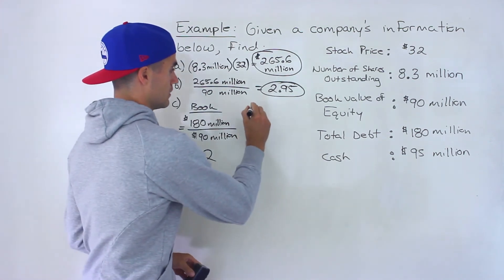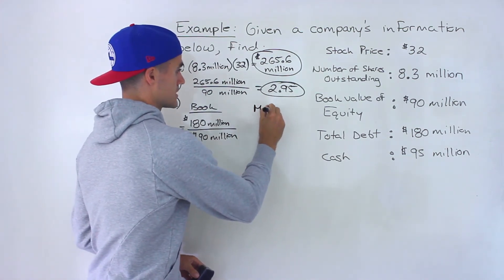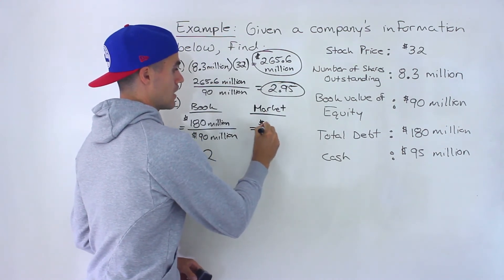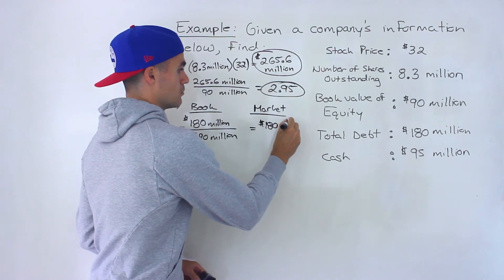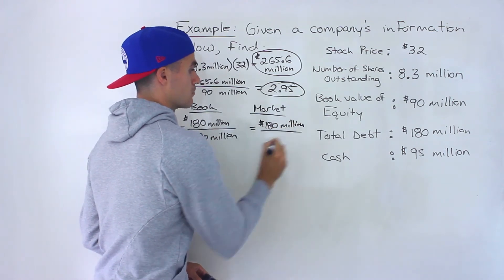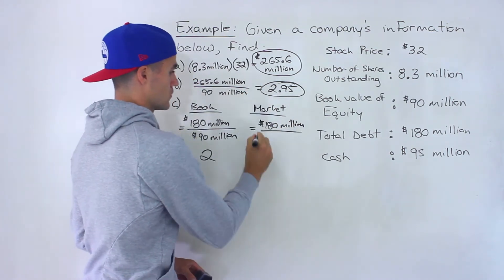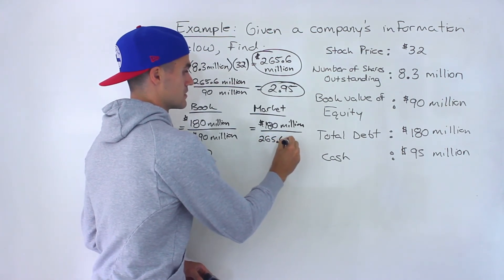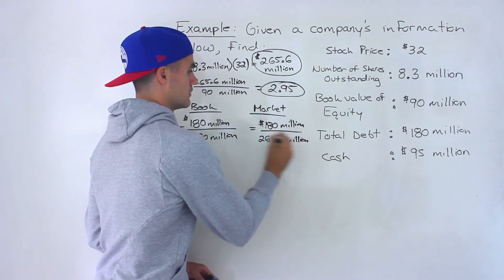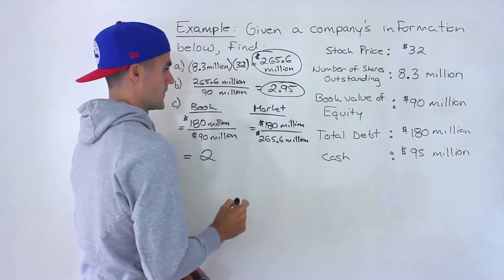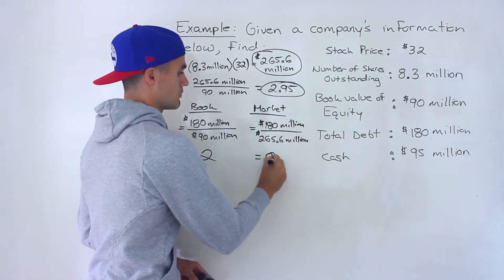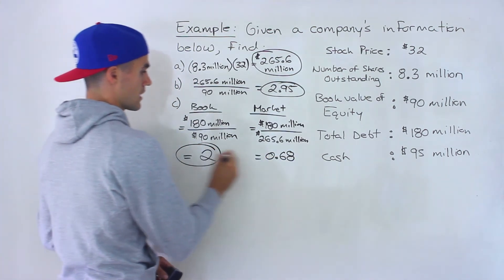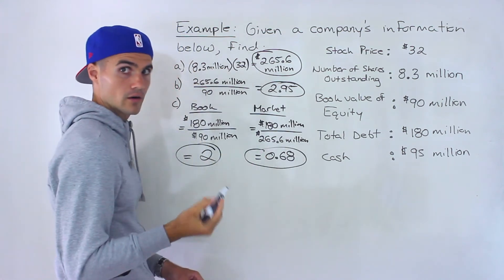And then getting the market debt to equity ratio, we would take that same debt of 180 million, but now we're going to divide it by the market value of equity, which we found up there, 265.6 million. And so when you divide those, you'd end up with 0.68 if you round to two decimal places. So those are the two answers for C.